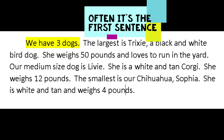We have three dogs. The largest is Trixie, a black and white bird dog. She weighs 50 pounds and loves to run in the yard. Our medium-sized dog is Livy. She is a white and tan corgi. She weighs 12 pounds. The smallest is our Chihuahua Sophia. She is white and tan and weighs 4 pounds.